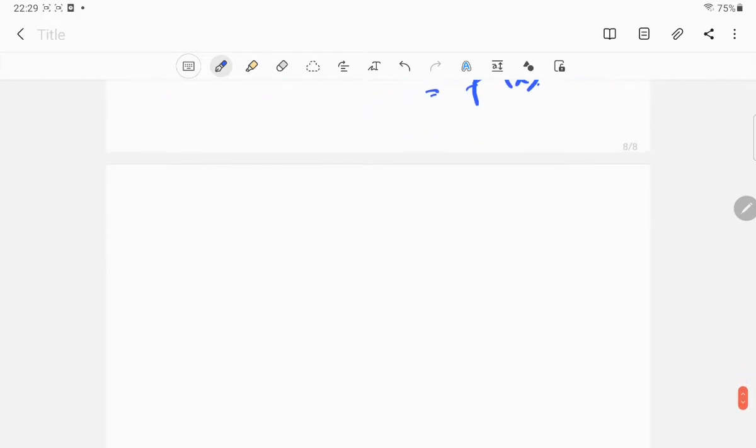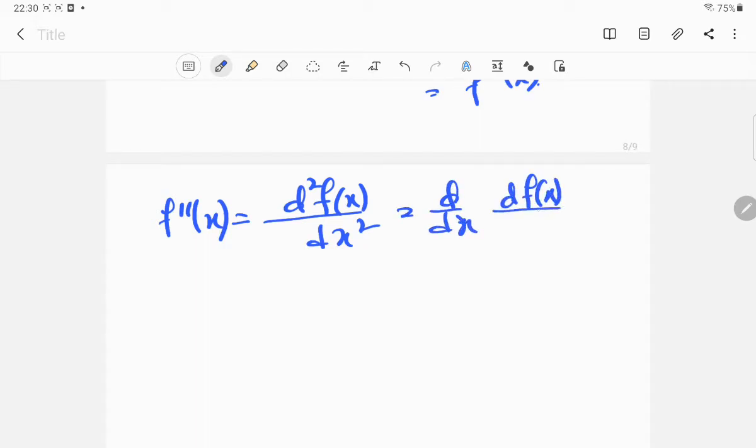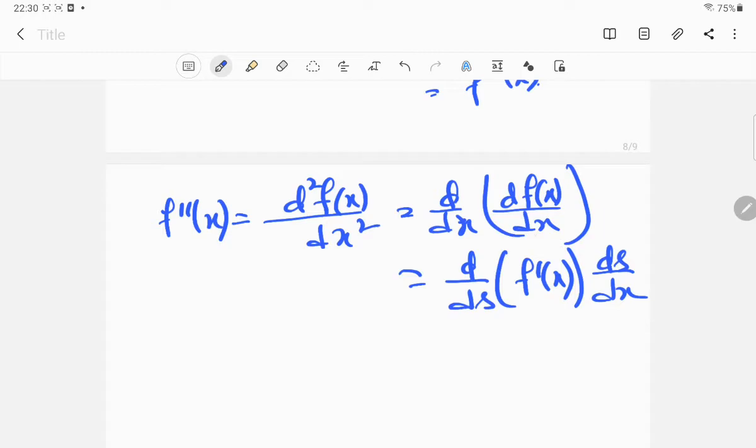So we have f double dash x, which is d 2 f x by d x 2. This is nothing but d by d x of d f x by d x. Here I have written d by d x in place of d x, I have written d s and d s and then d x. So ultimately it is neutralized, balanced.